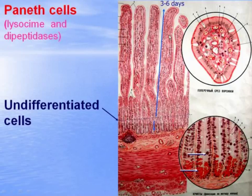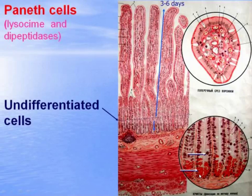The full replacement of the epithelium of villi takes place during three to six days. The young cells can also move to the bottom of crypts to replace the Paneth cells, but this process is much slower — several weeks.